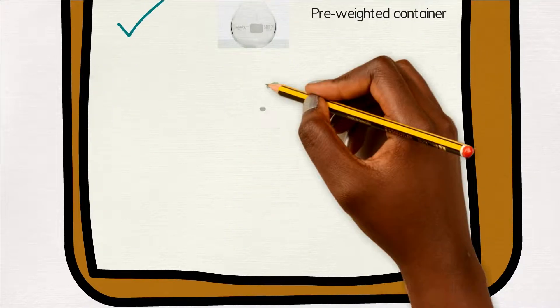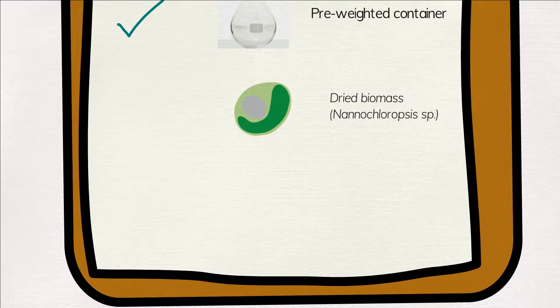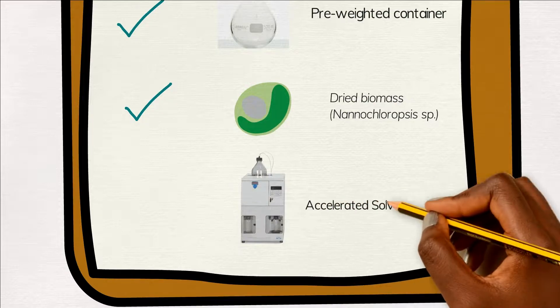The dried biomass - in this case we used Nannochloropsis subspecies, which is famous for its high lipid content - and of course the accelerated solvent extractor.